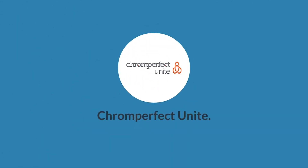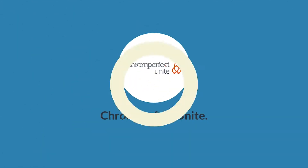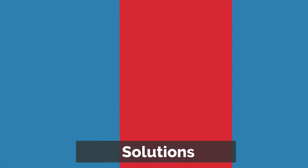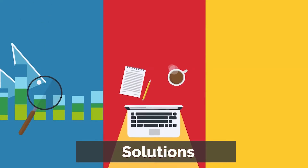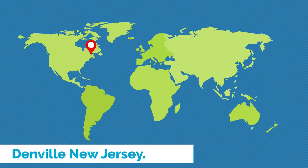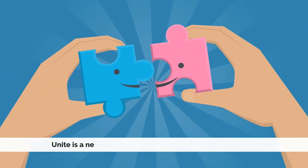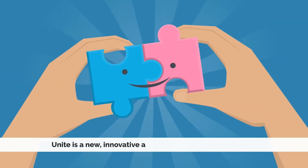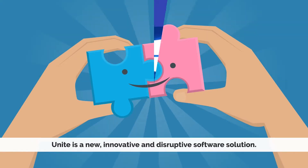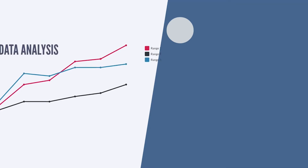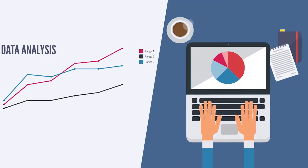Introducing ChromePerfect Unite, the first universal chromatography data analysis, reporting, and storage solution from the ChromePerfect Development Studios based in Denville, New Jersey. Unite is a new, innovative, and disruptive software solution designed for Windows 10, revolutionizing analytical data analysis and reporting.